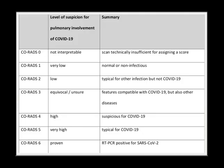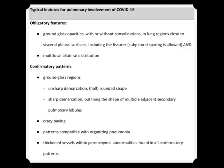It was categorized as 0, 1, 2, 3, 4, 5, and 6, with levels of suspicion as: not interpretable, very low, low, equivocal, high, very high, and proven case of COVID-19. Let us see in brief about all these classification systems.